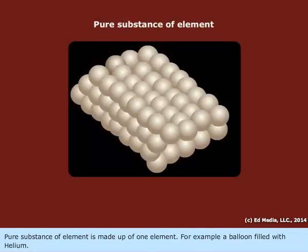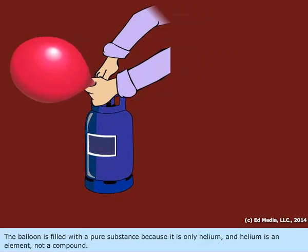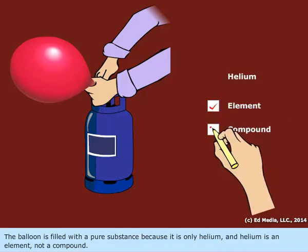Pure substance of element is made up of one element. For example, a balloon filled with helium. The balloon is filled with a pure substance because it is only helium, and helium is an element, not a compound.